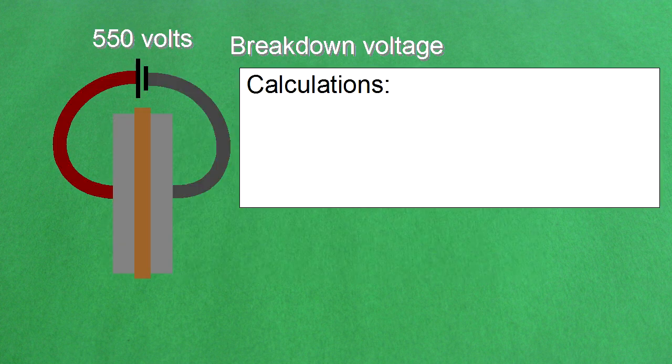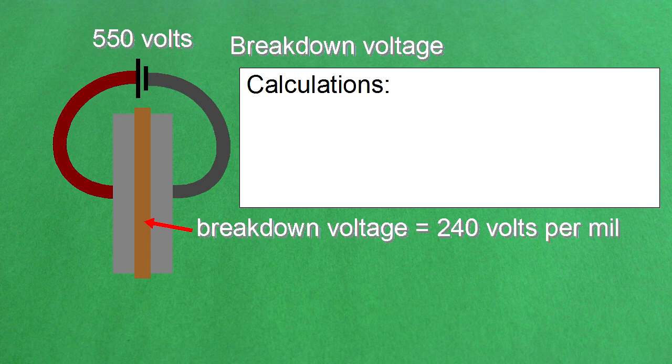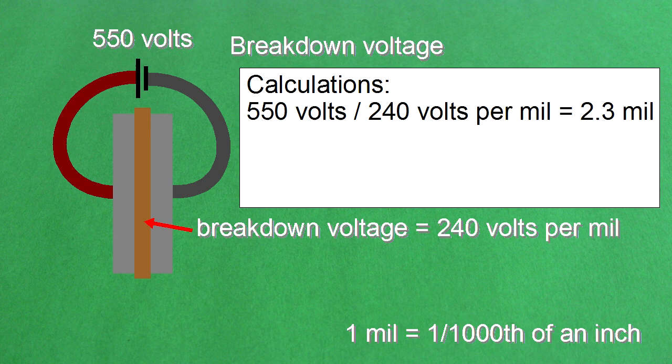As an example, let's say you'll be putting 550 volts across the capacitor, and the dielectric you're planning on using has a breakdown voltage of 240 volts per mil. One mil is one thousandth of an inch. 550 volts divided by 240 volts per mil is a thickness of 2.3 mil.